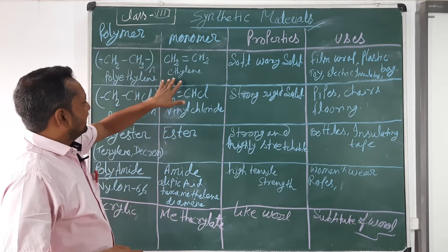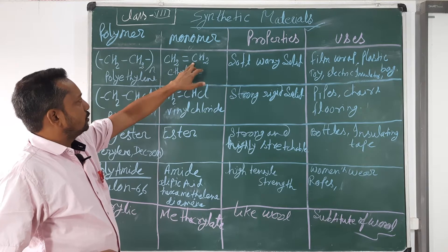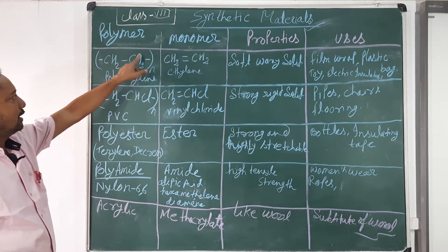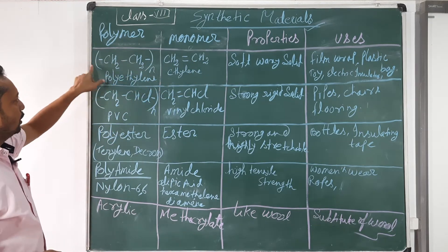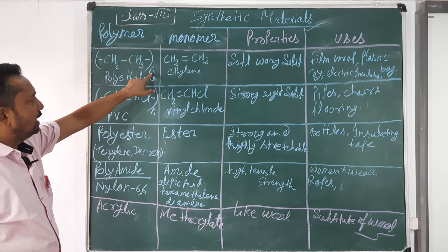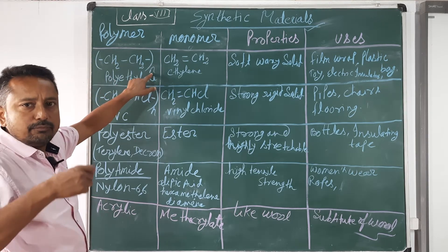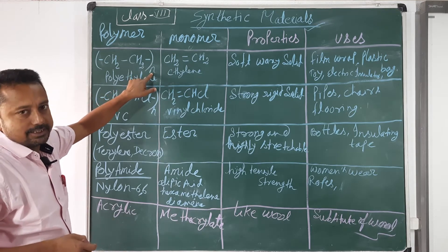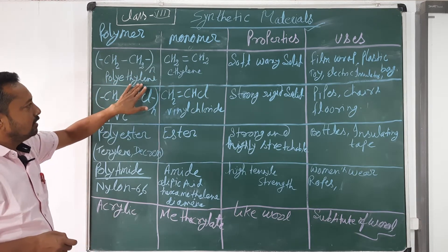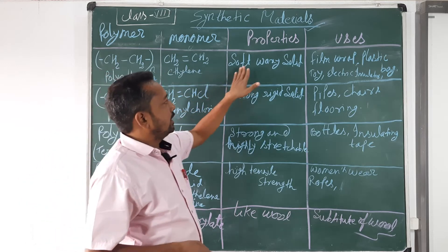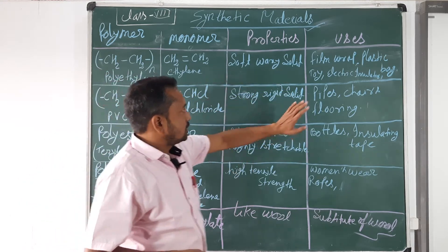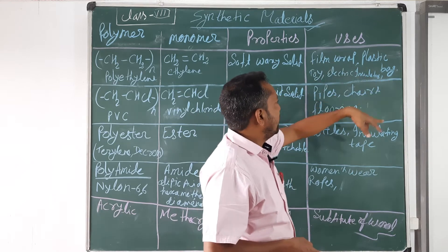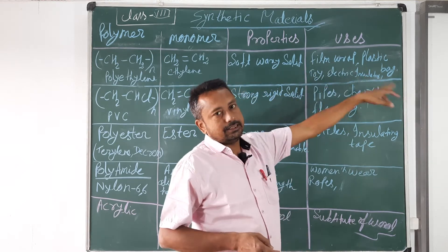For ethylene, CH2=CH2 is the monomer for polythene. This is the chemical formula of polythene, where n represents the number of monomers joined together during polymerization. Polyethylene is a soft and waxy solid which is used in film wrap, plastic bags, toys, and electric insulators.